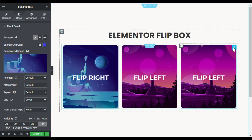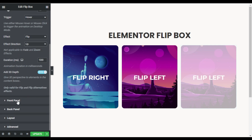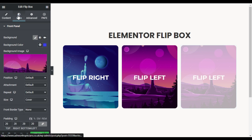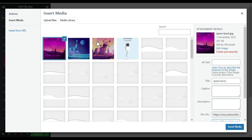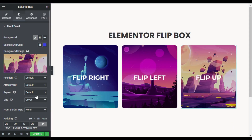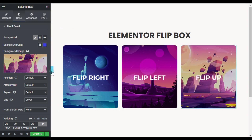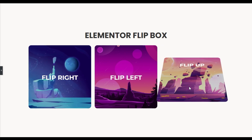For the third flip box, first I'll change its direction to Up, and on the front panel I'll change the title to 'Flip Up'. Then I'll go to Style and change its image — I'll choose this image and click Insert Media. Now it will look like that. I'll close the editor and it will look like that on your live site.